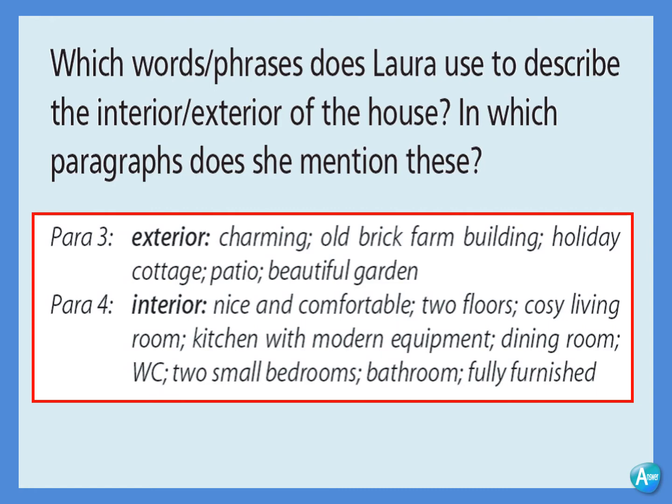In paragraph 3, Laura described the exterior. She said it's charming — old brick farm building, holiday cottage, has a patio and a beautiful garden. In paragraph 4, she mentioned the interior: nice and comfortable, two floors, cozy living room, kitchen with modern equipment, dining room, WC, two small bedrooms, bathroom, and it's fully furnished. This is how Laura described the house to Peter in her email.